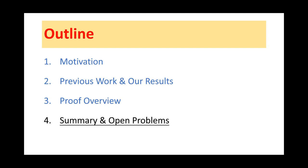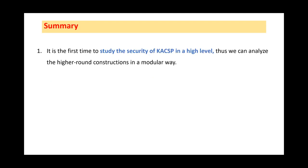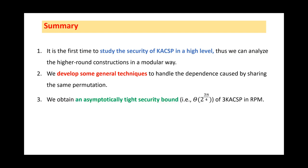Okay, in the last part, we will summarize this work and also give some open problems. To the best of our knowledge, it is the first time to study the security of KACSP at a high level. And we also develop some general techniques to handle the dependence caused by sharing the same permutation. Based on the new techniques, we obtain a tight bound of three KACSP in random permutation model.